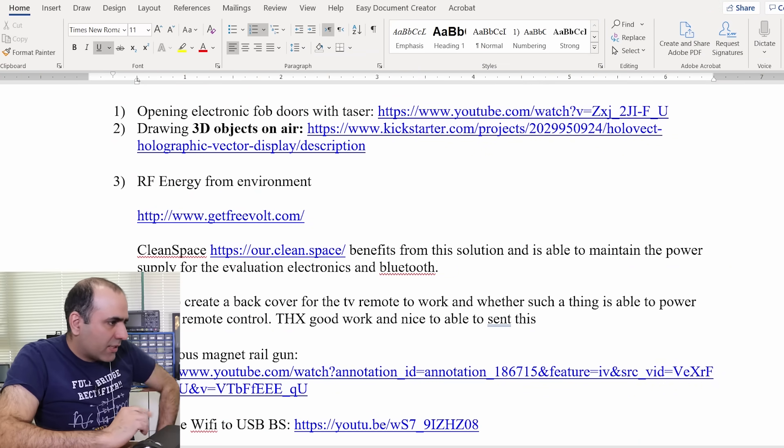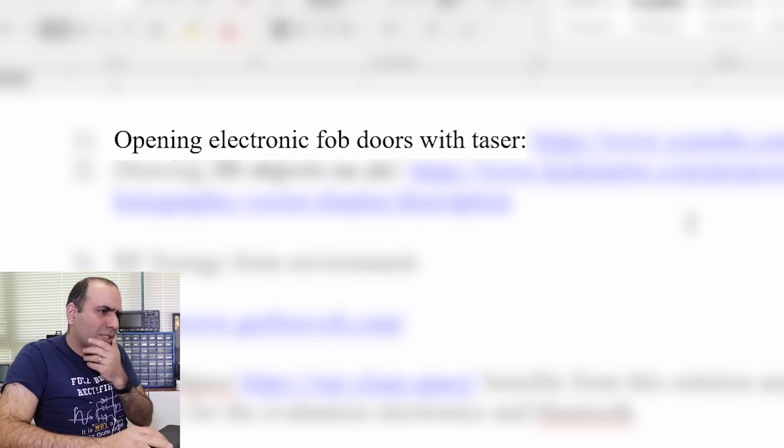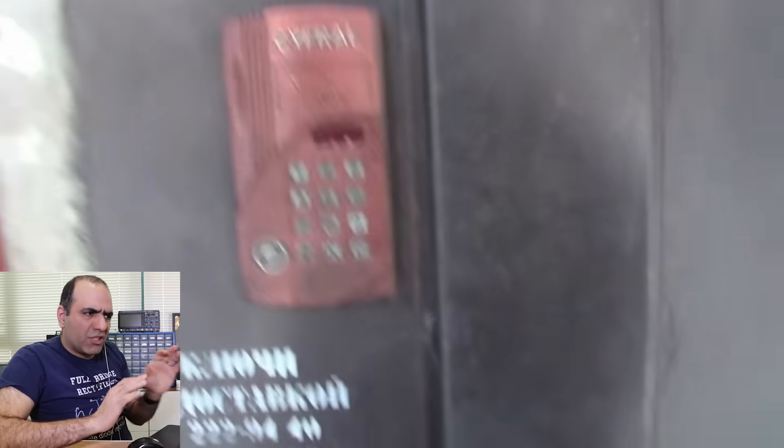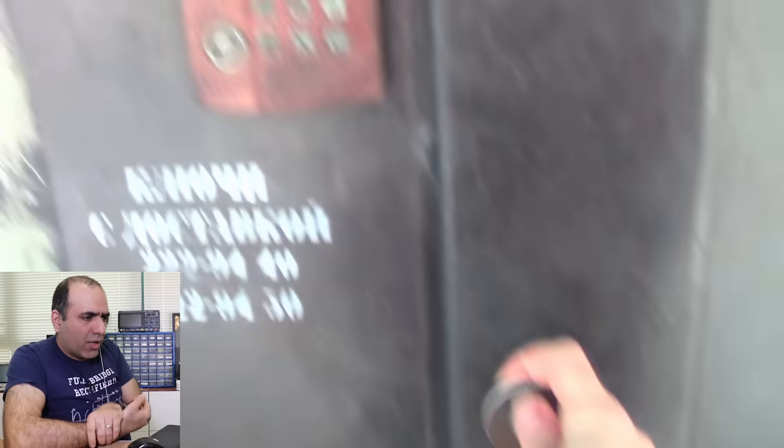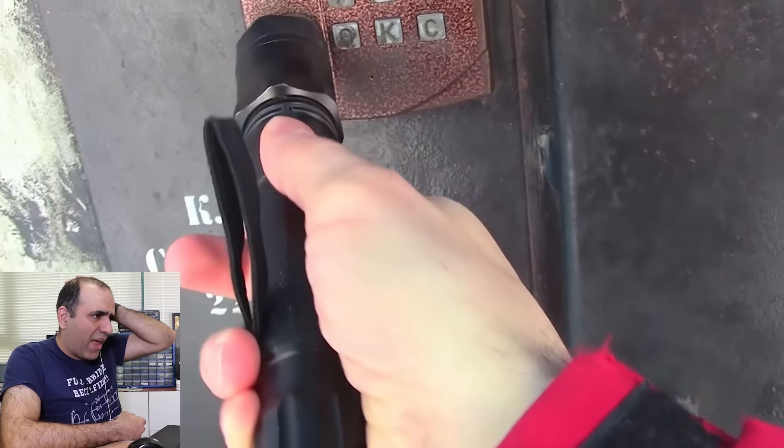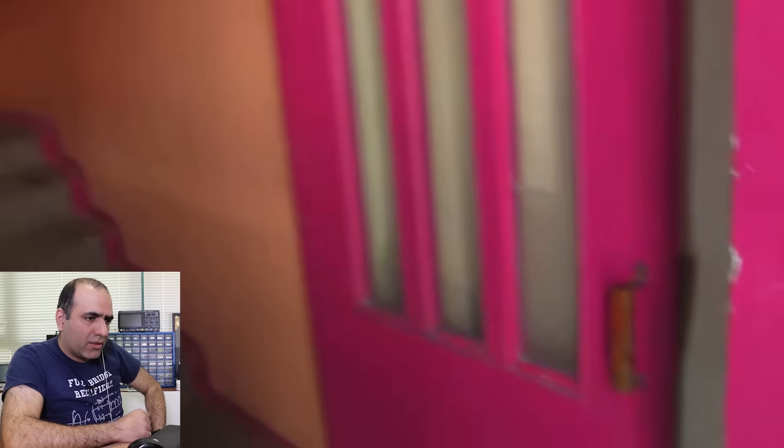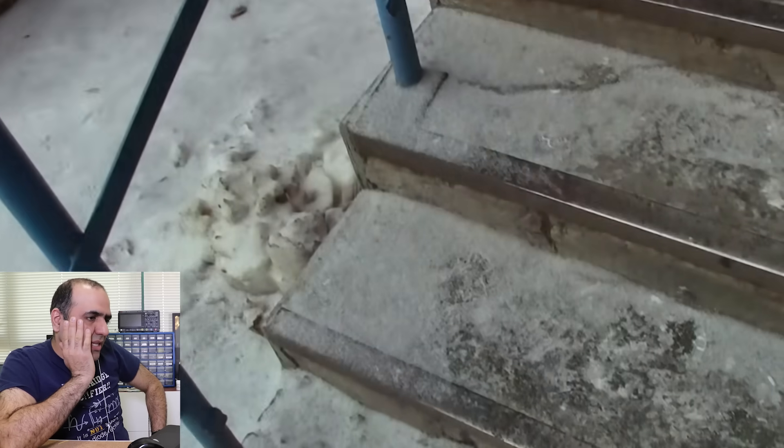This is my list and the first item is opening electronic fob doors with taser. Let's look at it. So this door uses these keypads to unlock. The guy has a taser you can buy off Amazon. He zaps the keypad and the door opens simple as that.